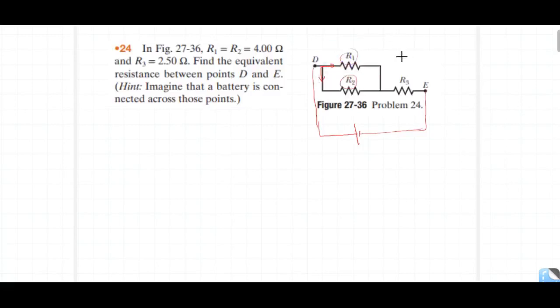R1 and R2 are in parallel combination. Then R12, which is R1 and R2 combined, and R3 are in series combination.